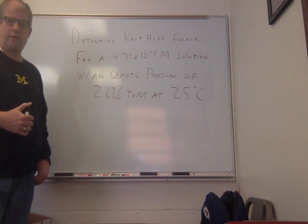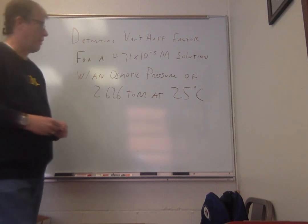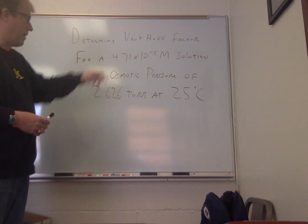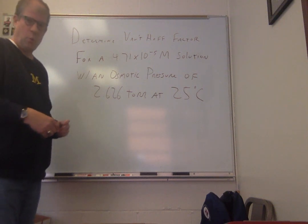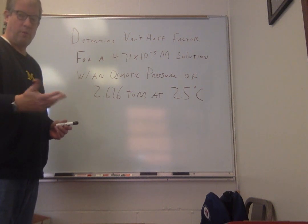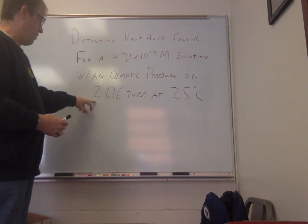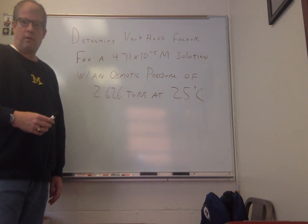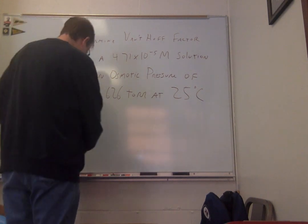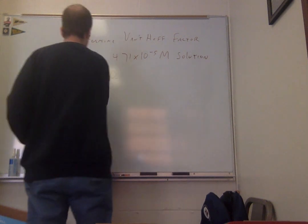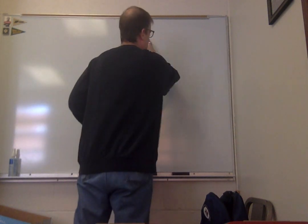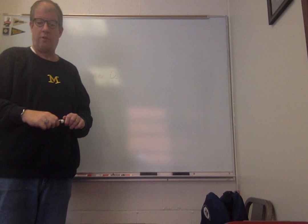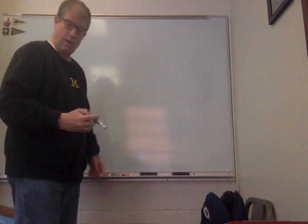The first question someone asked was how to determine the Van't Hoff factor for a solution. The Van't Hoff factor is the letter i. Let's say we have a 4.71 times 10 to the minus 5 molar solution that has an osmotic pressure of 2.626 torr at 25 degrees C. If you've prepared, you should know what equation we're going to use for this.